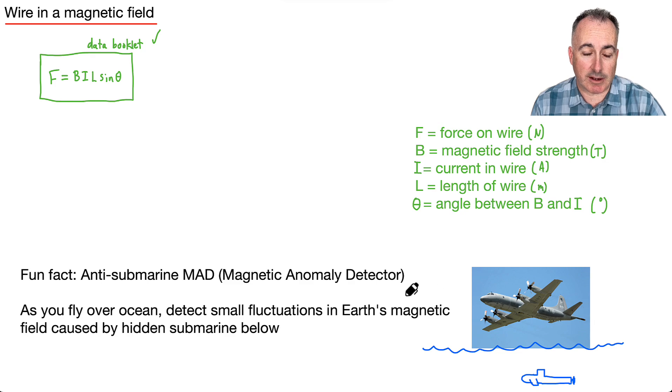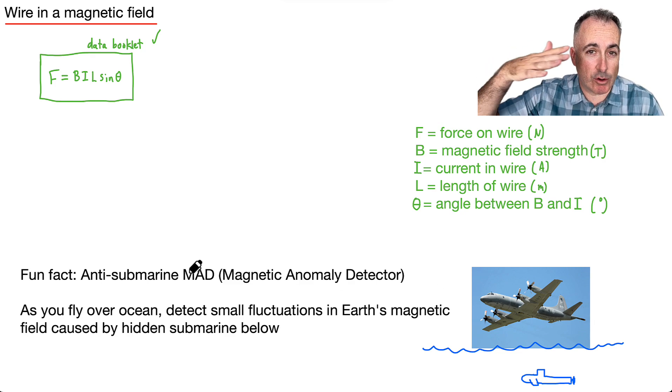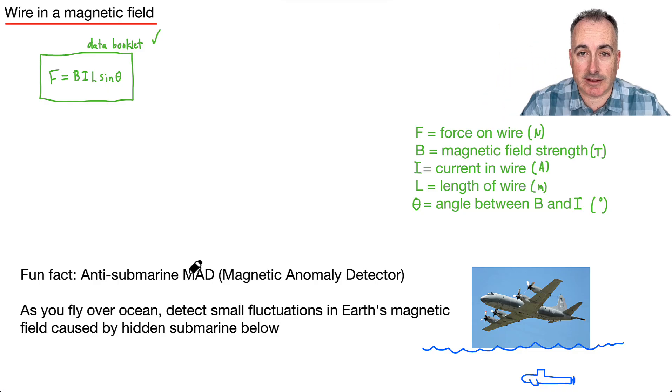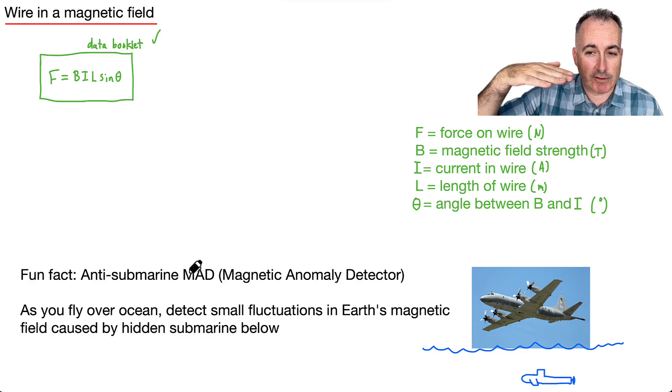We have a MAD boom or a magnetic anomaly detector. And the idea here is, as you fly over the ocean, you're just measuring the Earth's magnetic field. You basically measure it with some devices, something like this.